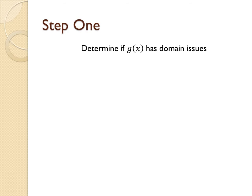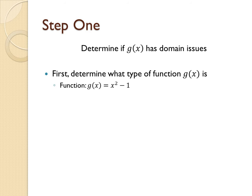For step 1, we need to determine whether g(x) has domain issues. The first thing we need to do is to figure out what type of function g(x) is. Let's look at the function's definition, which is g(x) equals x squared minus 1. It's fairly easy to see that this function is quadratic in nature.